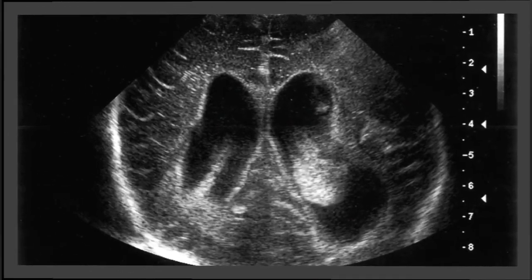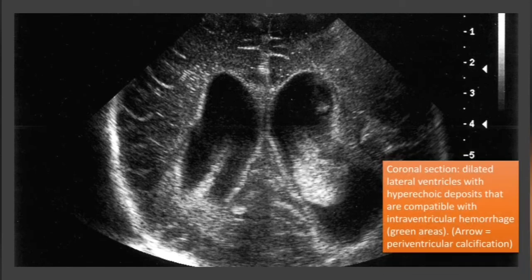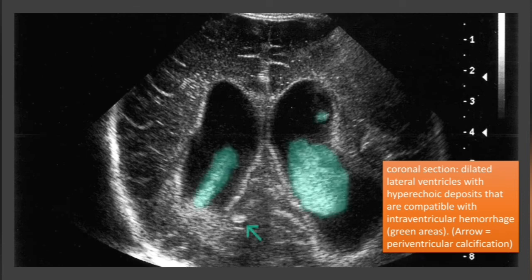This next image is a coronal section showing dilated ventricles with hyperechoic deposits compatible with intraventricular hemorrhage, shown in the green areas. The arrow is indicating periventricular calcifications.